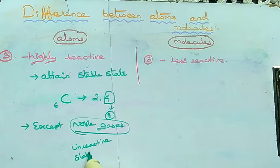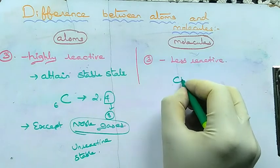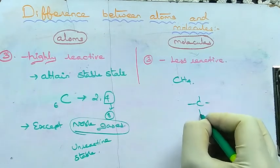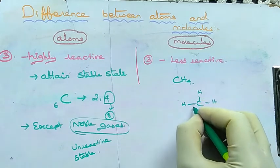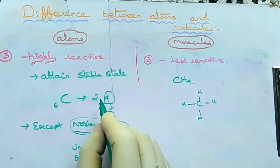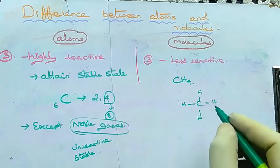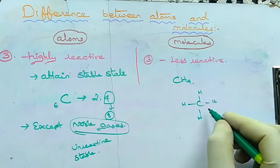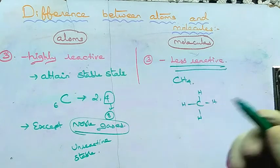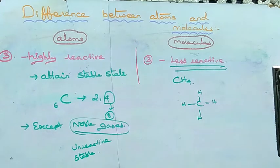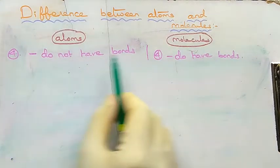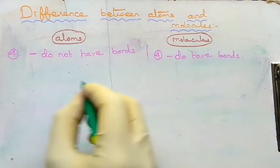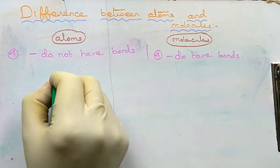Now consider molecules — for example, CH4. In CH4, carbon is bonded with four hydrogen atoms. Since carbon needs four more electrons to attain the octet state, it forms four bonds with four hydrogen atoms. This is why molecules are less reactive — they are already in a stable state.